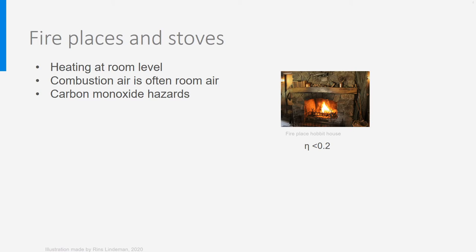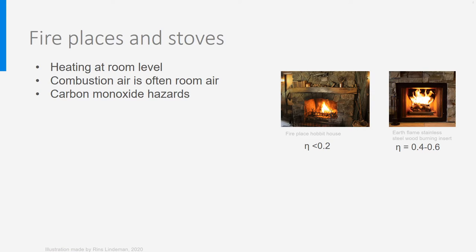However, fireplaces use biomass and are often experienced as pleasant and cosy. That's why many improvements have been realized, like the use of inserts. An insert is a casing of steel or iron and insulating glass, which prevents the heat from flowing away. Some systems are equipped with a fan that blows heat into the room and sometimes through other rooms via a pipe. Efficiency will be around 0.4 to 0.6. Be aware that combustion air is taken from the room itself, so the room needs to be well ventilated.